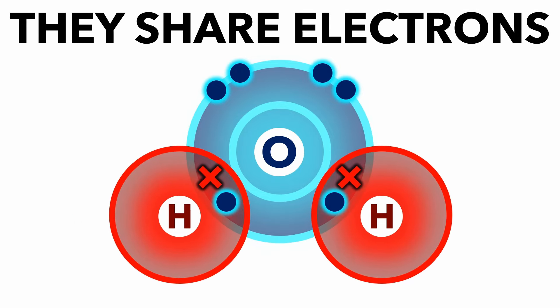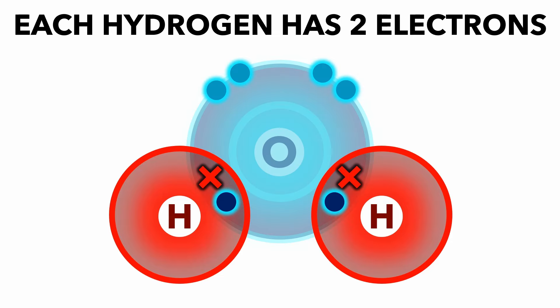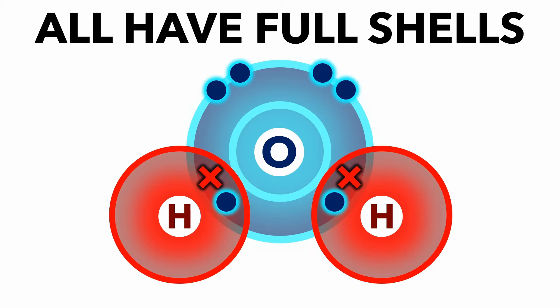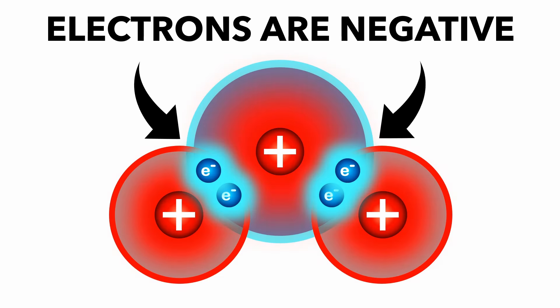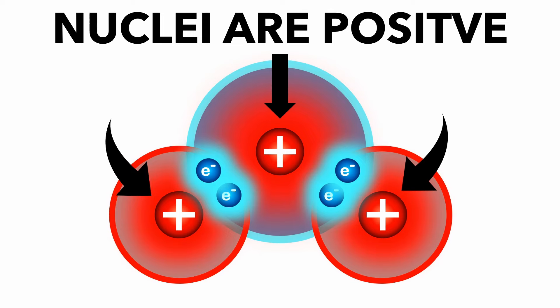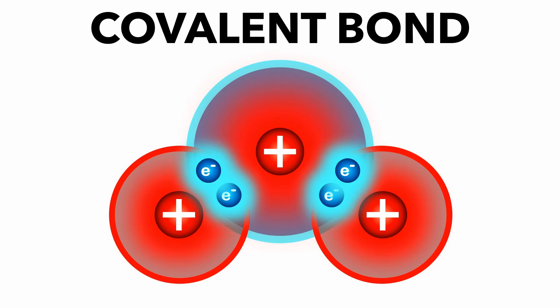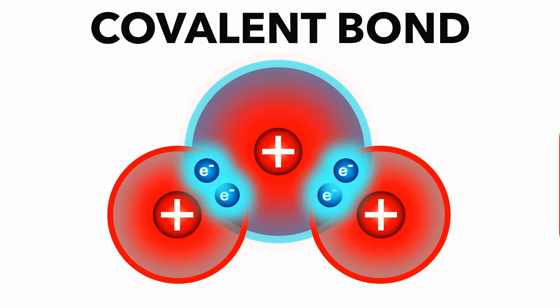The oxygen atom shares one pair of electrons with each hydrogen atom. Each hydrogen now has two electrons, and the oxygen has eight. All of them are happy. So where does the bond come from? The shared pairs of electrons are negative, and the nuclei of all atoms are positive. The attraction between them is the covalent bond.